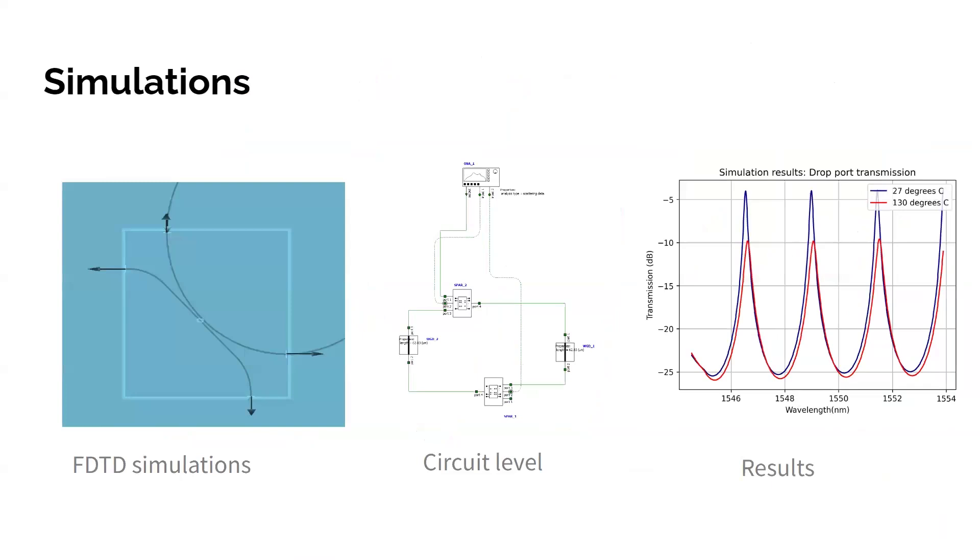So the first thing I did was to study these systems using simulations. So we started off with three-dimensional FDTD simulations, which is finite difference time domain. And then I took the results I got from that and looked at it in a circuit level simulation. I varied some parameters such as the width of this gap between the ring and the straight waveguide on the side, and chose the parameters that gave me the best results.